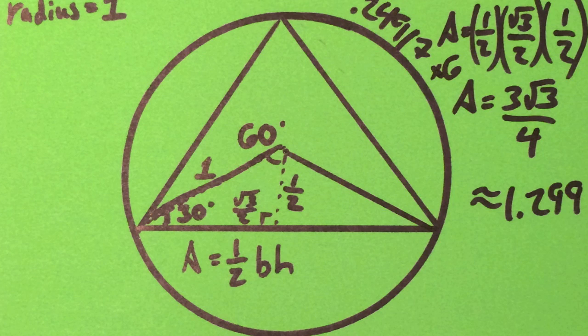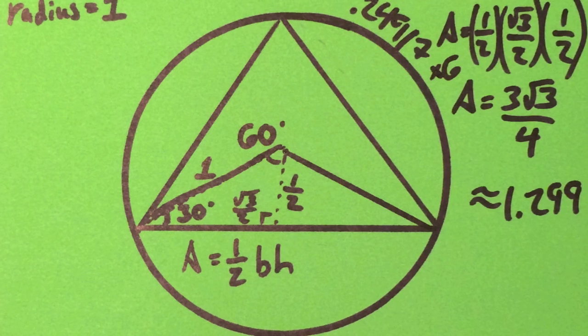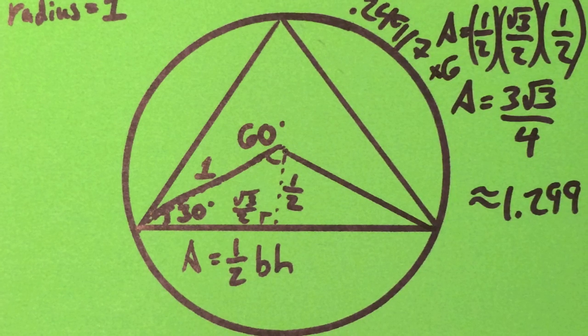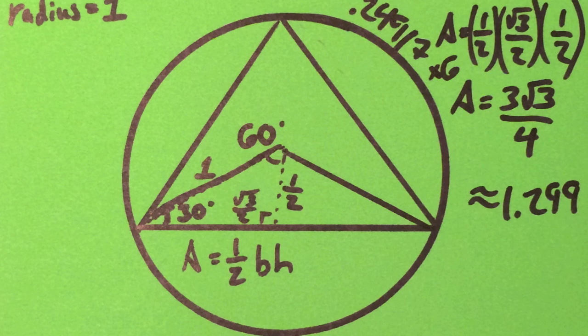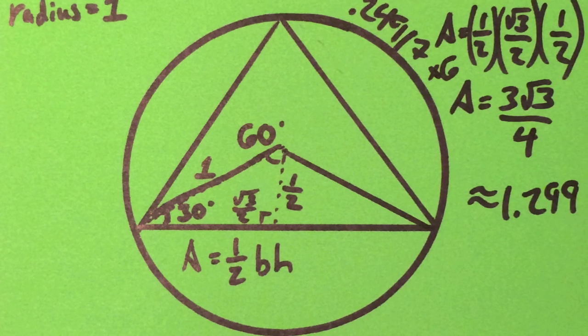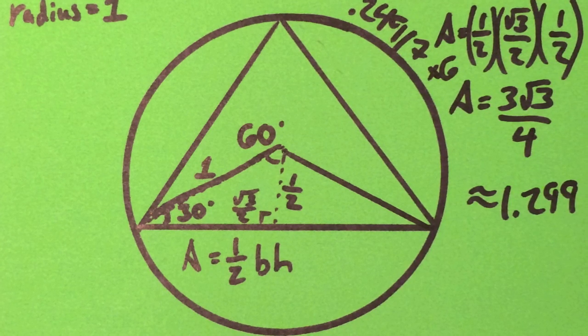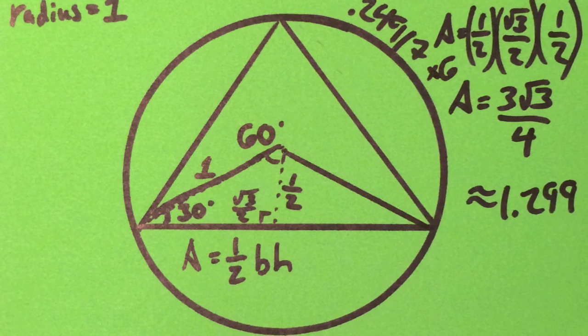Plug this into the formula one half base times height to find area. This will result in 0.24917. Multiply this number by 6 to cover the entire triangle, thus finding the area of a triangle in a circle with radius 1.